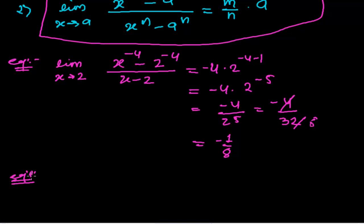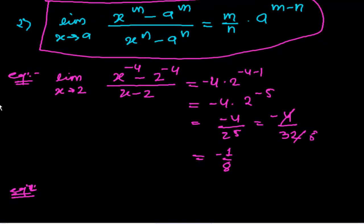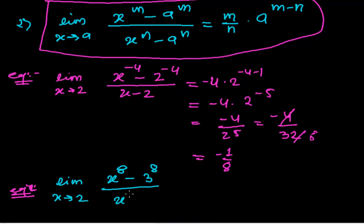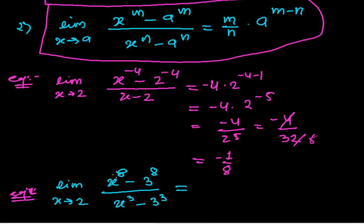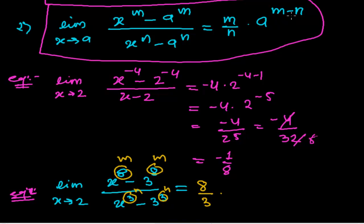Now another example using the second formula. Suppose limit when x tends to 3 of (x to the power 8 minus 3 to the power 8) divided by (x to the power 3 minus 3 to the power 3). To solve this, we use the second standard result. Here 8 is working as m and 3 is working as n, and the constant a is also 3. So the result is m upon n times a to the power m minus n, that is 8 upon 3 times 3 to the power (8 minus 3).